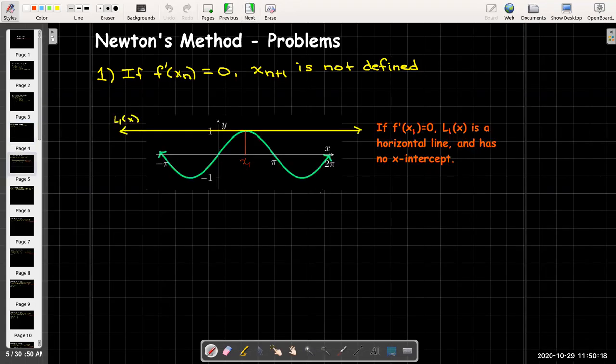Geometrically what this means is that we have a vertical tangent line at one of our approximations. If at our initial approximation we have a vertical tangent line, remember the next approximation is found by looking at the x-intercept of the linearization or tangent line approximation. Well if the tangent line approximation is a horizontal line then there is no x-intercept.